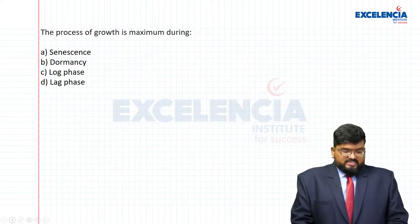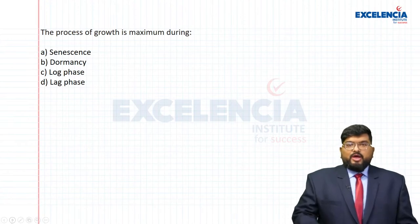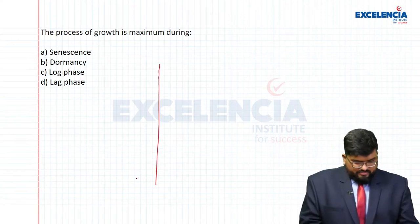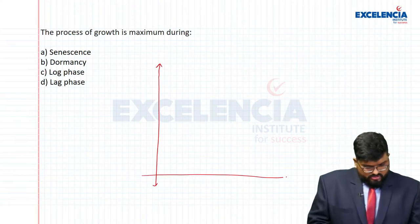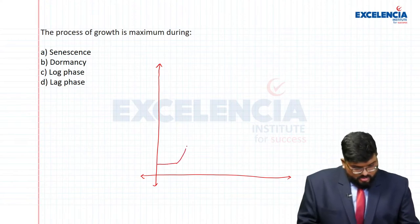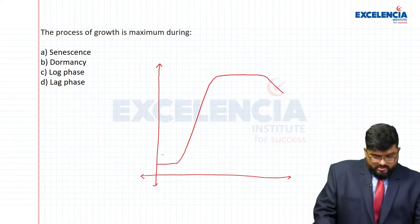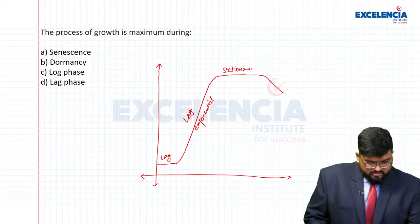The process of growth is maximum during — senescence, dormancy, log phase, or lag phase? We need to look at the growth curve. The growth curve shows four phases: lag phase, log phase (also called exponential phase), stationary phase, and death phase.